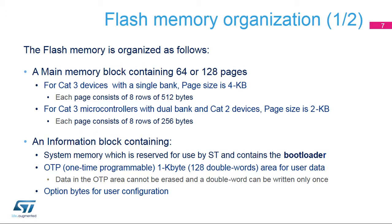In addition to main flash memory, the STM32G4 supports a system memory of 28 kilobytes containing the ST Bootloader, and a 1-kilobyte OTP memory that can be used to store user data that must not be erased or modified. If 1 bit is 0, the entire double word can no longer be written, even with the value 0. Option bytes contain default settings to configure IPs in the system-on-chip and are automatically loaded after a power-up reset.